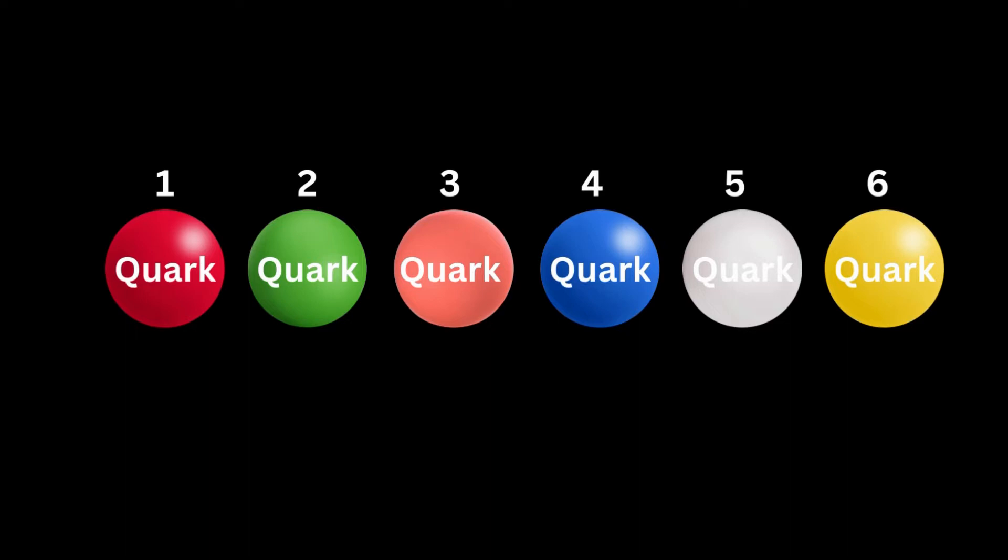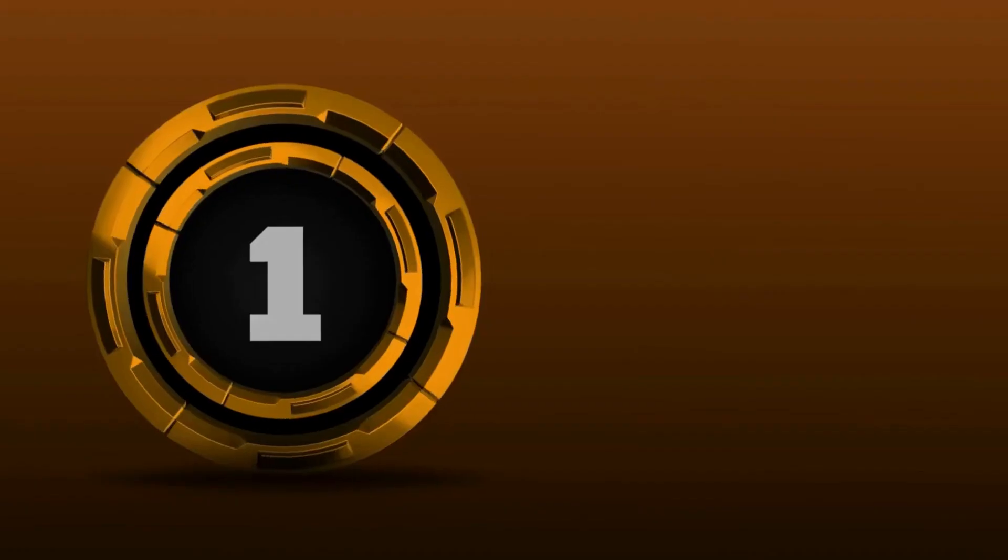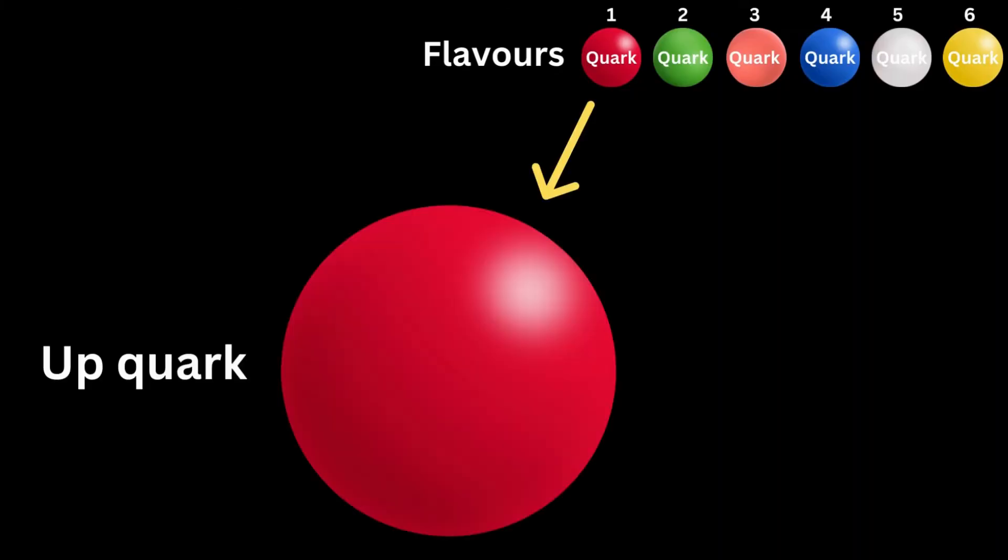There are six distinct quark varieties or flavors, each with unique characteristics. Number one: the up quark, denoted as u. This is one of the lightest quarks and has a charge of plus two thirds.